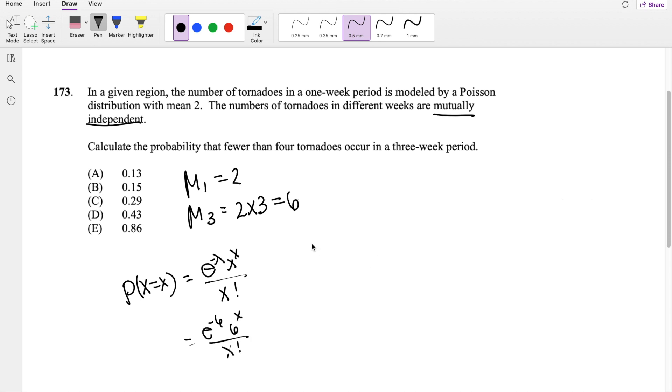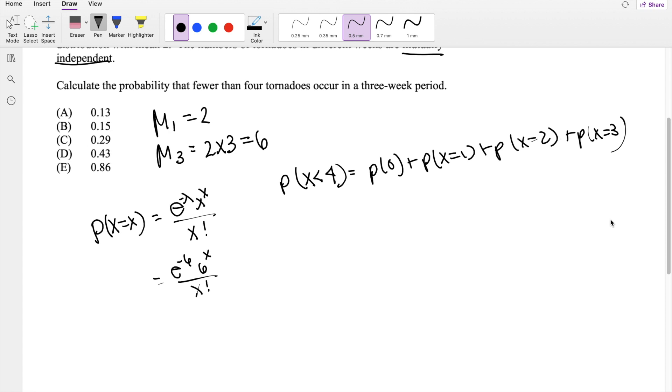And now we're looking for the probability that x is less than 4 tornadoes. That's just exactly the probability that x is equal to 0, plus the probability that x is equal to 1, plus the probability that x is equal to 2, plus the probability that x is equal to 3. It does not include 4 because it's less than the value of 4.